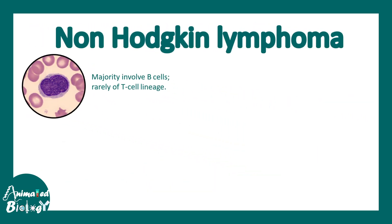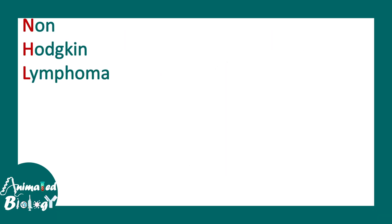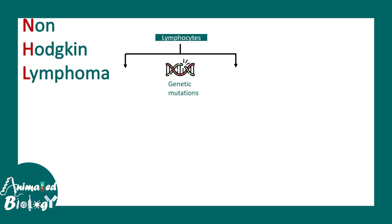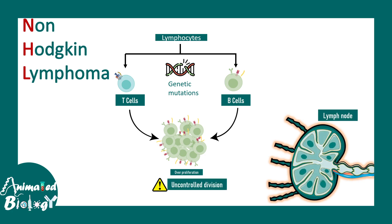Rarely T cell lineages are also involved. Multiple lymph nodes could be involved depending on what stage of the cancer it is. There could also be involvement of extranodal tissues. There can be non-contiguous spread, and many genetic changes, mutations, or chromosomal changes turn these T or B cells into extremely proliferative ones — their over-proliferation is often the cause of non-Hodgkin's lymphoma.